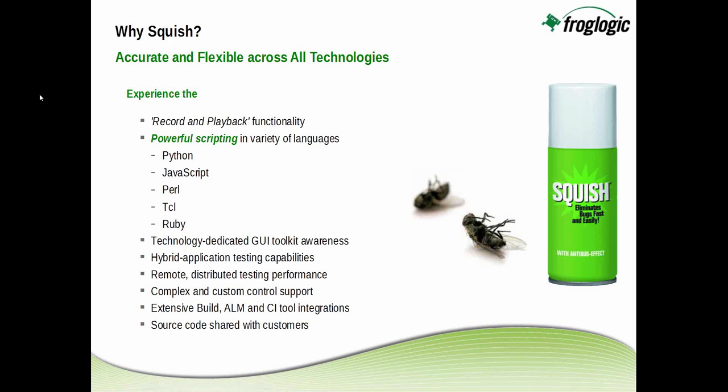We support a variety of technologies across different platforms, and a very important point is that we have dedicated GUI toolkit awareness of each of those technologies. We are not using accessibility access or other types of object recognition that rely on analyzing graphics — we are working with the toolkit. We understand the toolkit, and that helps you create tests that are reliable because we can find objects and see properties both visible to the user and properties not exposed to the user.